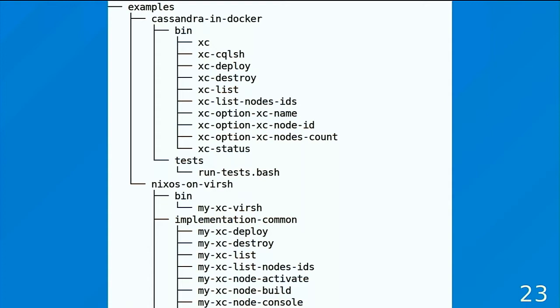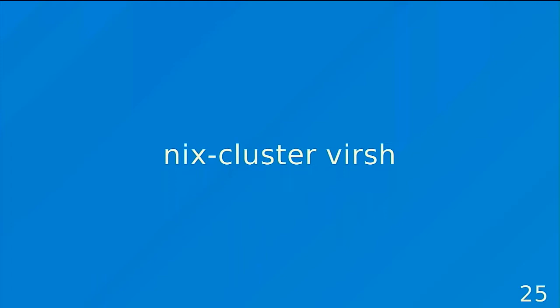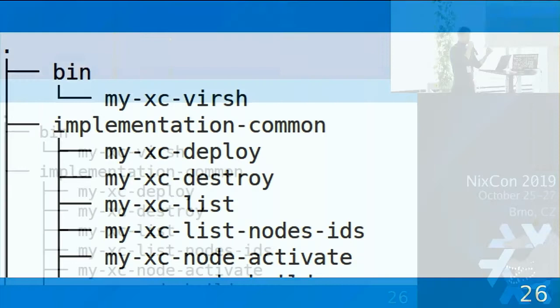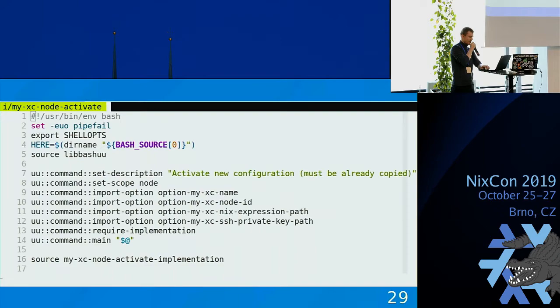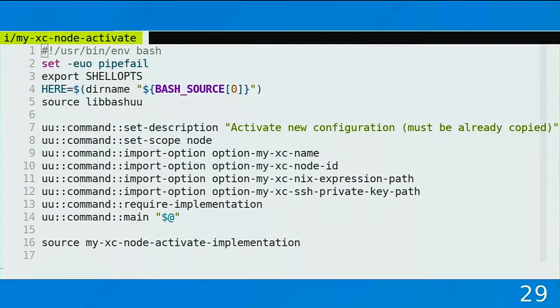For example, we have our main command and then subcommands. We write one command with four options — name, node ID, Nix expression, SSH private key path — and then we source the implementation in the last line. The implementation is really just a few lines of bash which does the job.